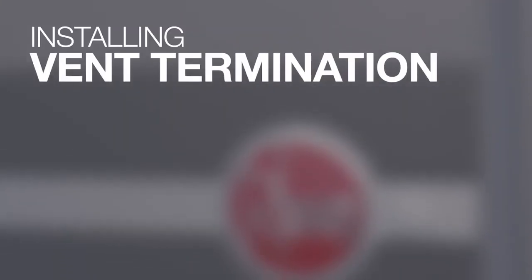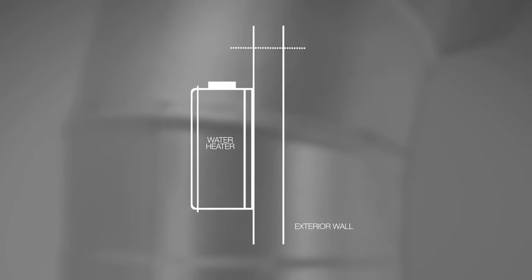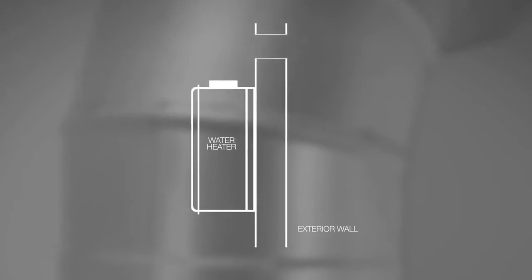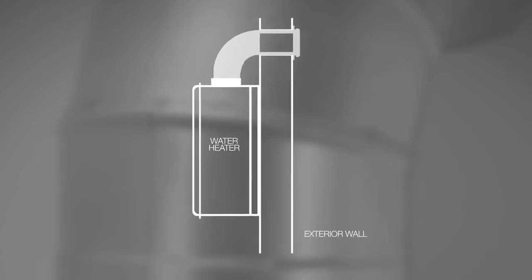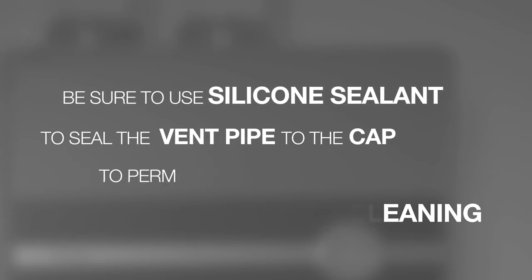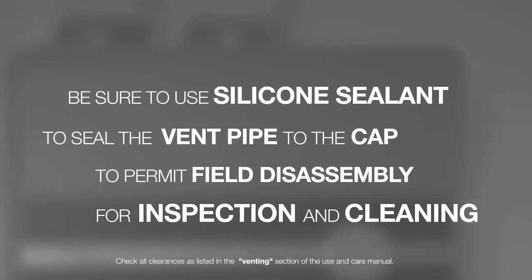Install vent termination. For the purpose of this video, we are showing the horizontal flat termination kit. Install the vent and air intake piping into the vent plate openings. Seal all gaps between the pipes and wall. Be sure to use silicone sealant to seal the vent pipe to the cap to permit field disassembly for inspection and cleaning.